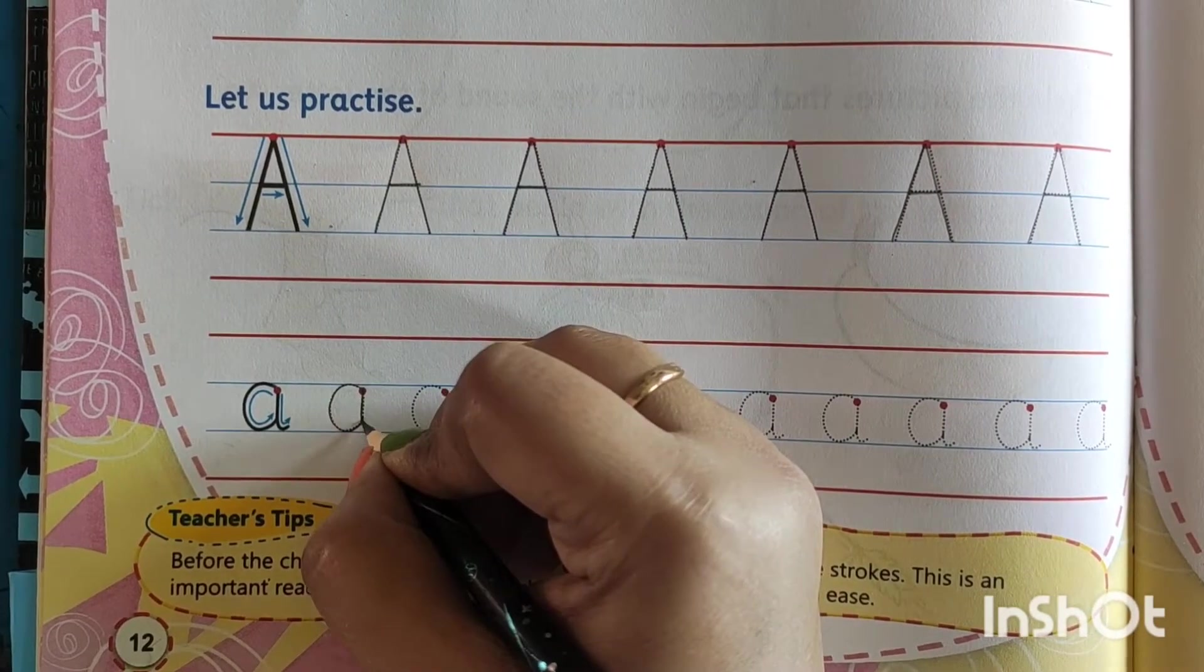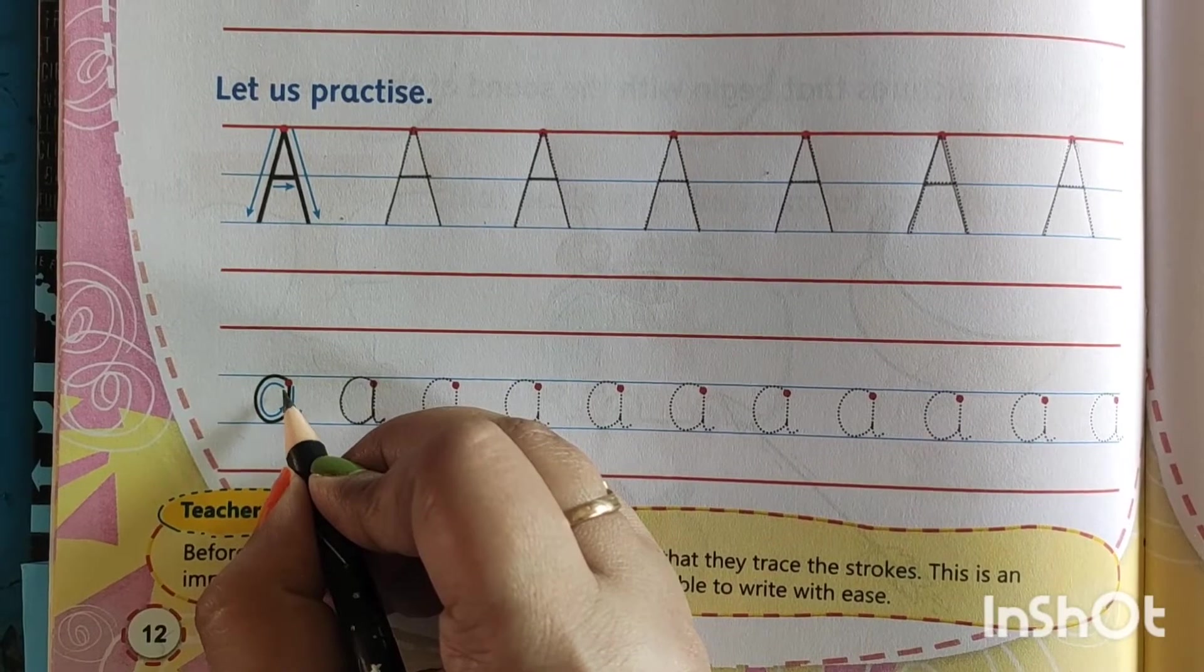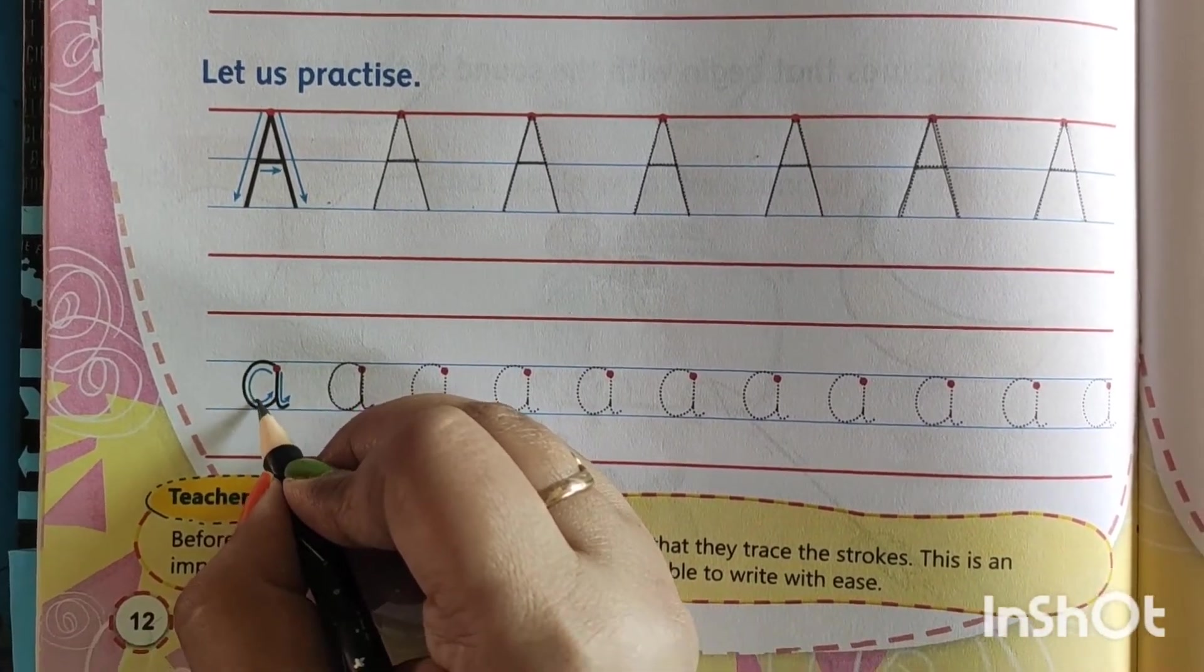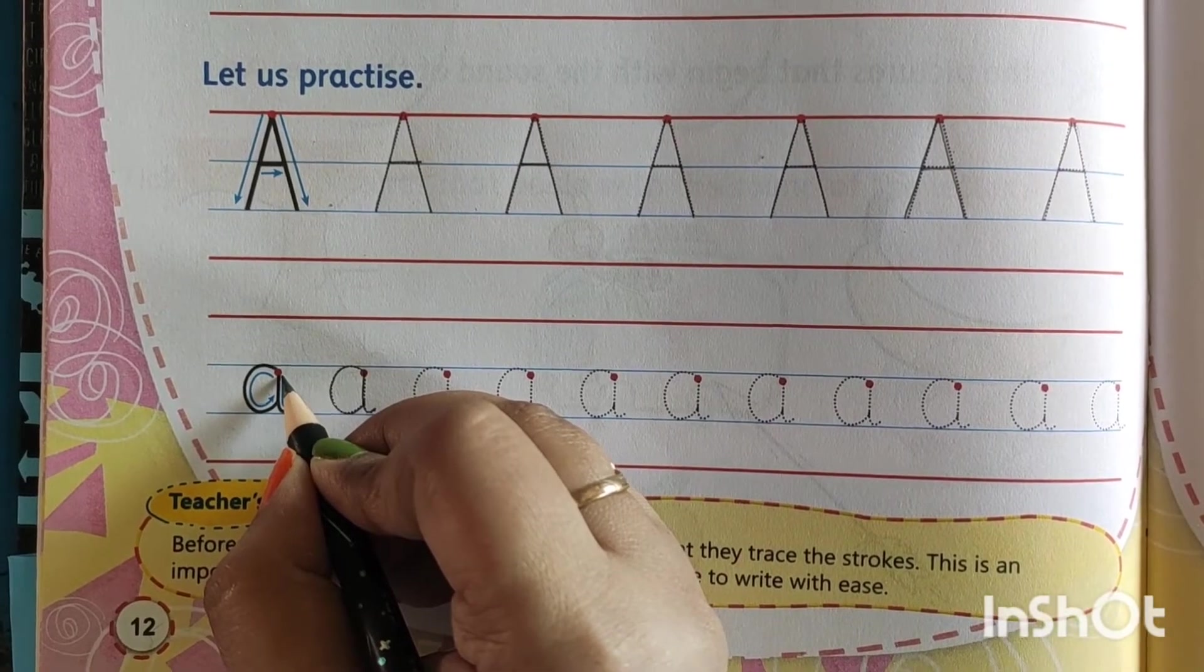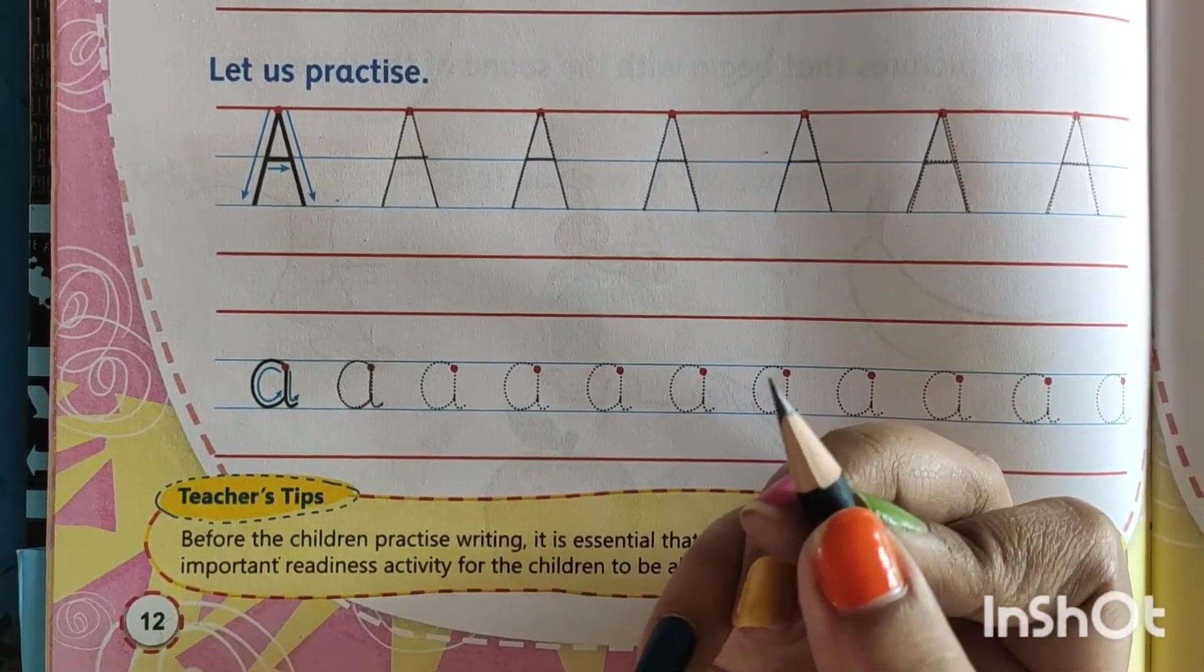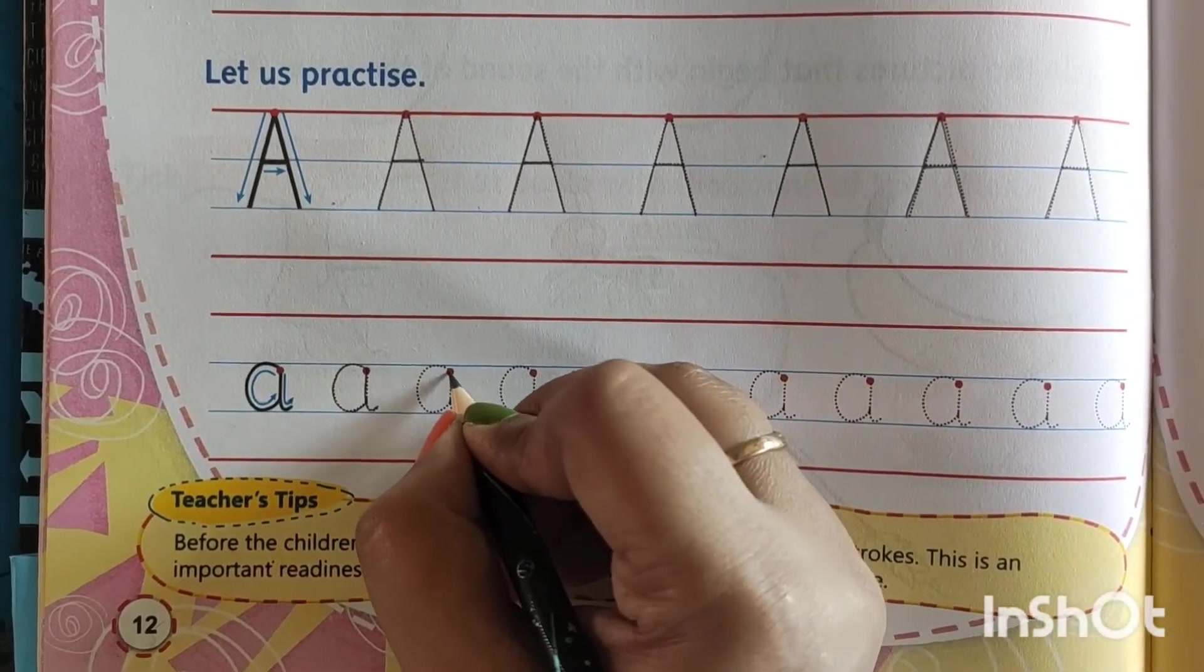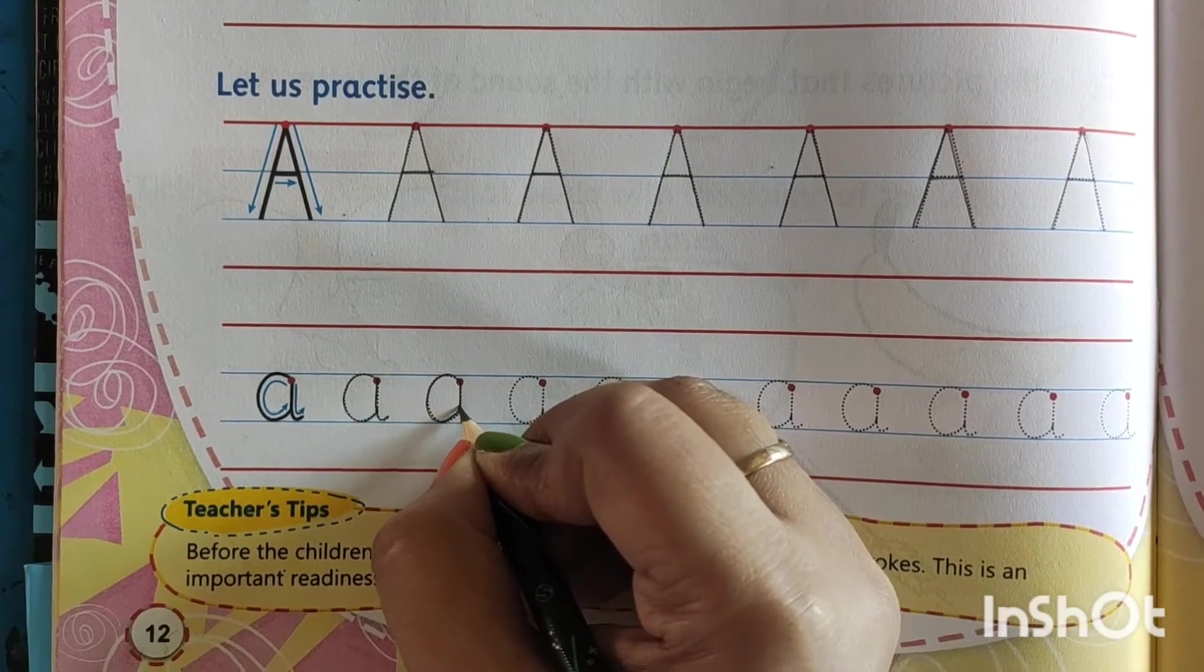Stop here. Then the line goes to down and make a little curve. You see the arrow is indicating from here start and stop here. Then the standing line will go down and little bit curve here.